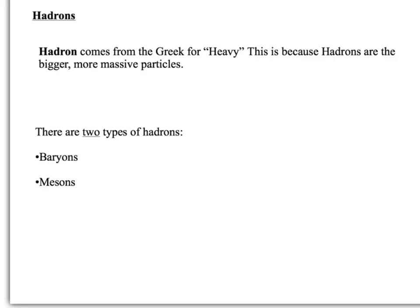Okay, so there are two types of hadrons. I'm going to look at these in a bit more detail in a second, but the two types are baryons and mesons. It's not baryons, it's baryons, and it's mesons. And it's very easy to get those mixed up with muons, the type of leptons, so be careful with that.